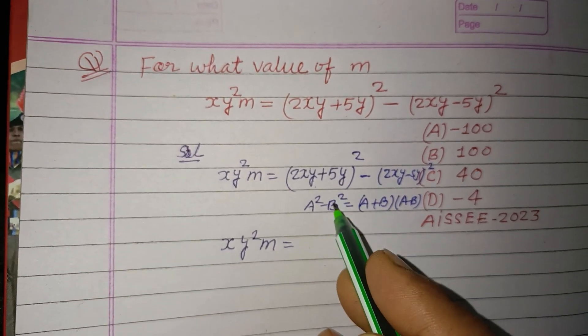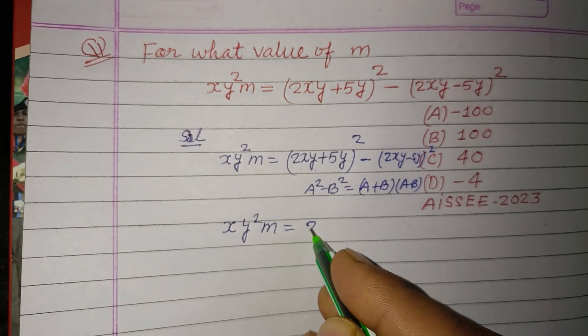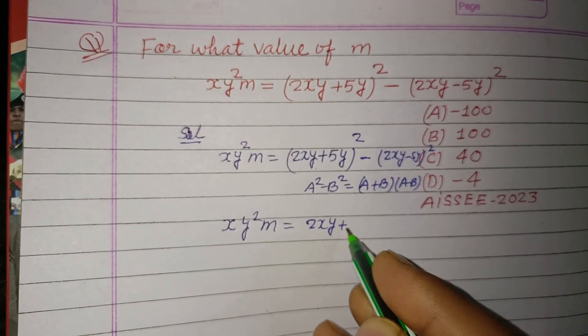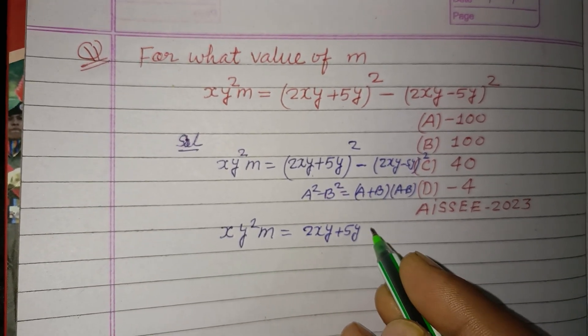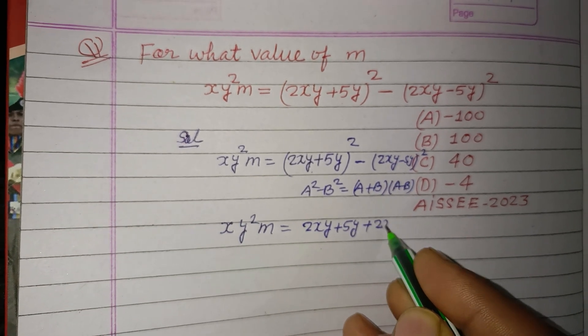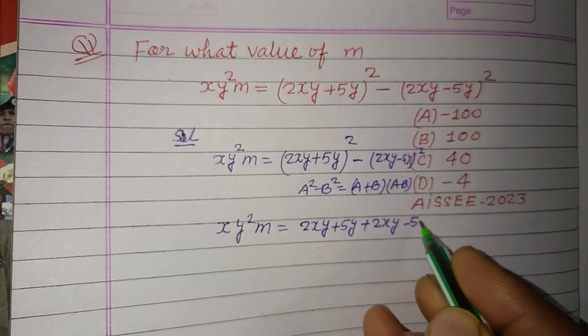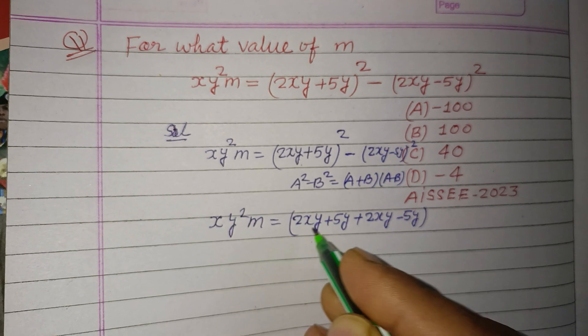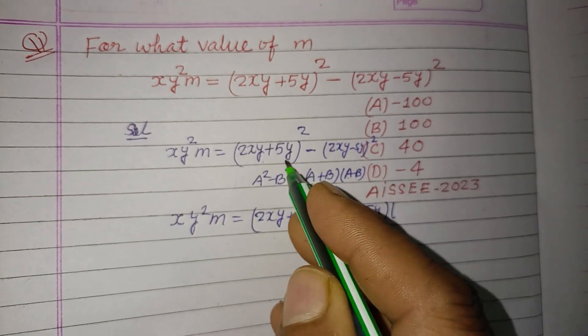First we add 2xy plus 5y plus 2xy minus 5y in the first bracket. Second, we subtract a minus b.